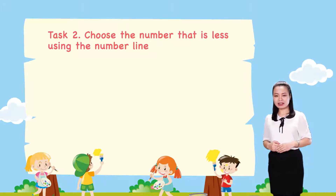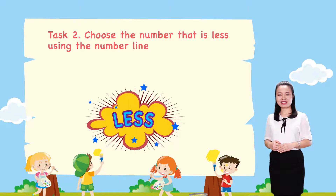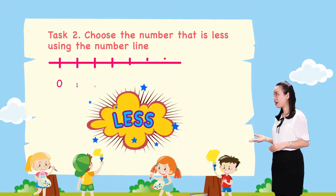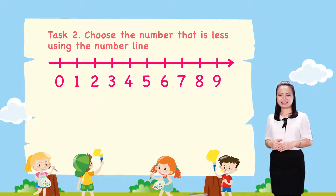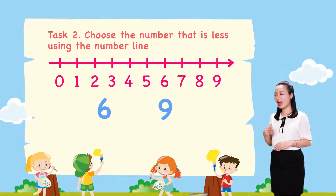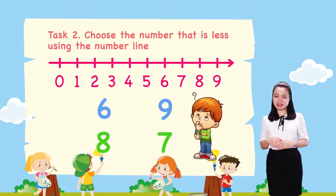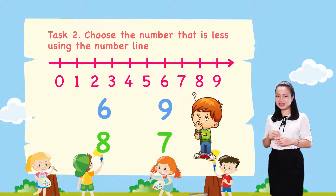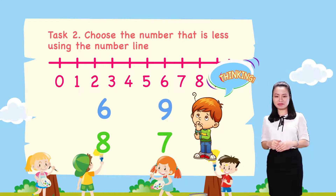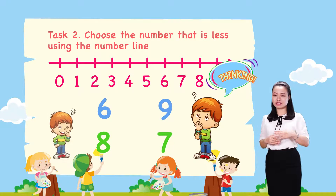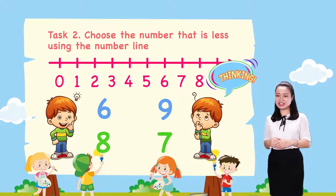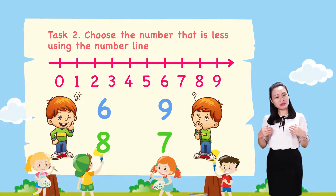Task 2: Choose the number that is less using the number line. The pairs are: 6 and 9, and 8 and 7. Try to think about the answers by yourself. Pause this video while you are thinking. When you're finished, replay the video to check the answers with me.